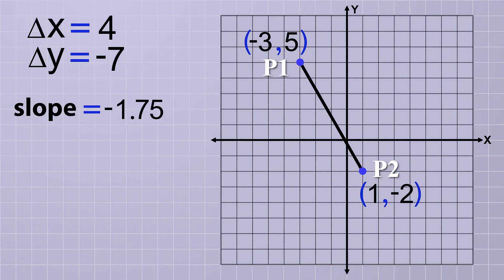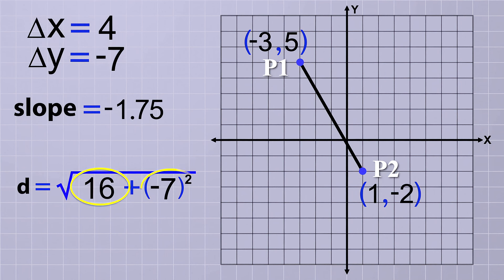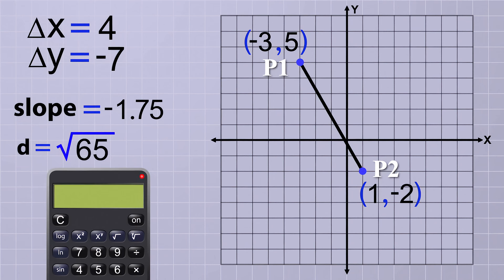Now that we've found the slope, let's find the distance between the points by plugging the deltas we already calculated into that equation. That gives us distance equals the square root of 4 squared plus negative 7 squared. 4 squared equals 16, and negative 7 squared equals 49. That means the distance is the square root of 16 plus 49, or the square root of 65. That root can't be simplified, but we can use a calculator to convert it to a decimal if we want to, giving us a distance of 8.062 rounded to 3 decimal places.